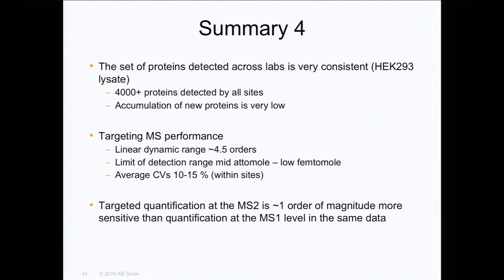Summary four: all 11 labs detected and quantified about 4,000 proteins with high reproducibility; accumulation of new proteins across labs is very low, confirming consistency. The targeting performance shows a linear dynamic range of about 4.5 orders of magnitude, reaching detection in the mid-attomole to low femtomole level depending on the peptide. Average CVs within sites are 10 to 15%, and average CVs across sites are approximately 20%. This is encouraging for reproducible experimentation.